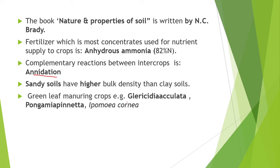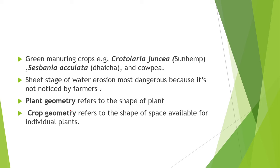The book 'Nature and Properties of Soil' is written by N.C. Brady. The fertilizer most concentrated for nutrient supply to crops is anhydrous ammonia, which has 82% nitrogen. Green leaf manuring crops are Gliricidia aculata, Pongamia pinnata and Ipomoea carnea. Examples of green manuring crops are Crotalaria juncea — sunhemp — Sesbania aculata, dhaincha and cowpea.